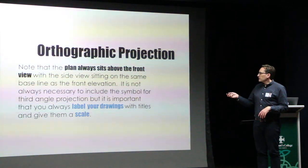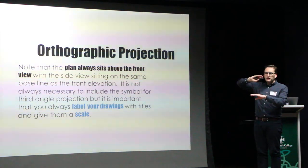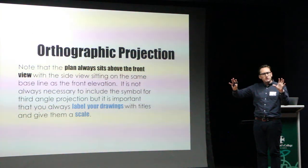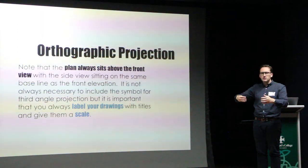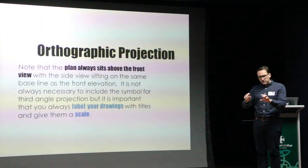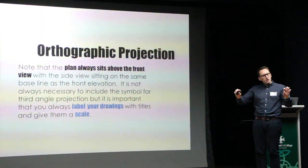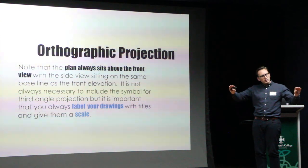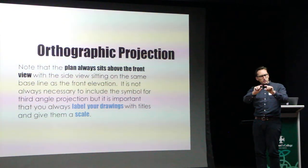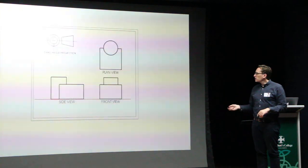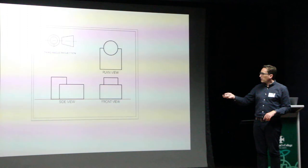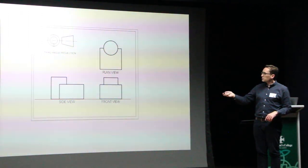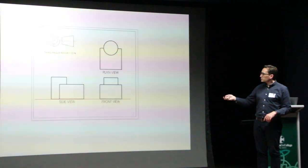This idea that the plan is sitting above your main view is a clear one, so you can make direct relationships between those two drawings. Things that sit at the same level on the ground are not floating one up higher than the other — you can make those connections across the drawings along the base. There is a direct relationship between those drawings.